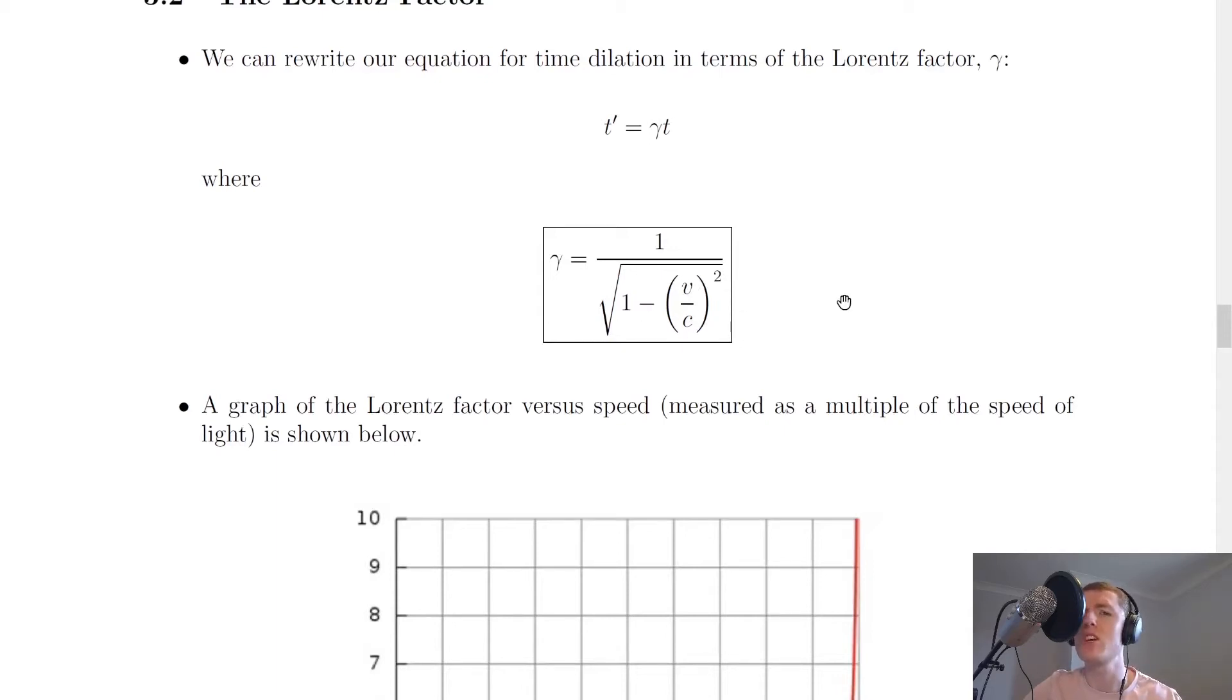So remember for the time dilation equation we had this term, but just with the t on the top. So because we can define the Lorentz factor as this, that means we can rewrite t prime as gamma times t. And if you multiply a fraction by t, you would just get t on the top there.